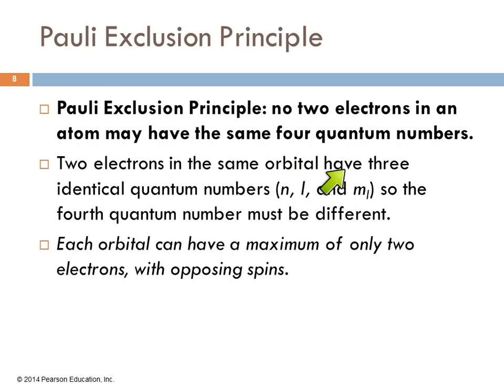If these are the same, the fourth quantum number has to be different. So each orbital can have only two electrons and they have to have opposite spins.